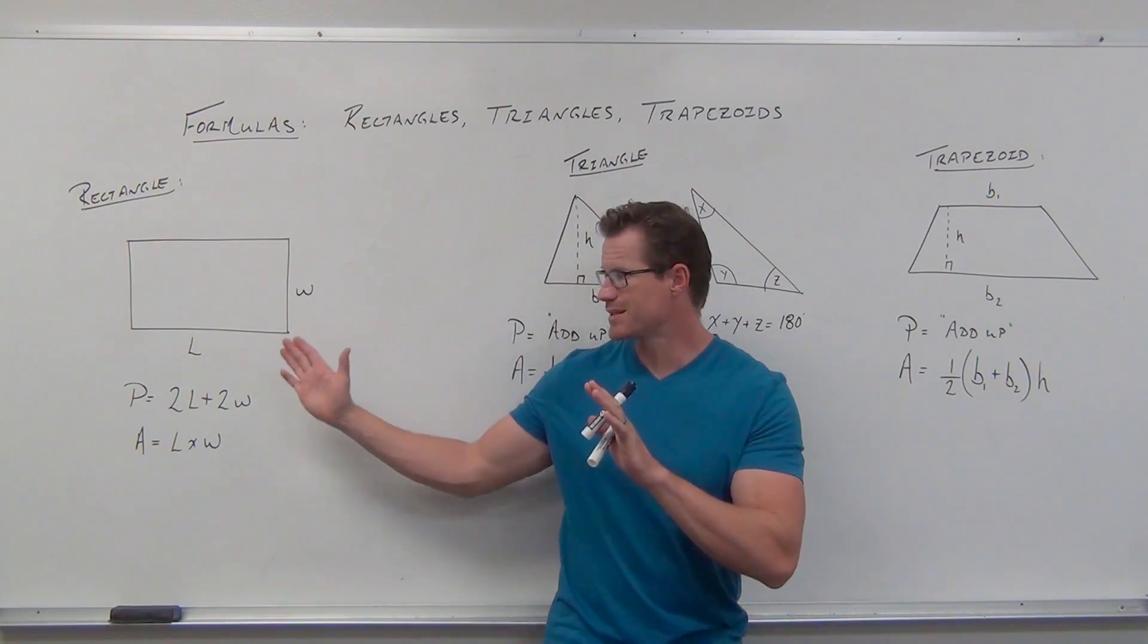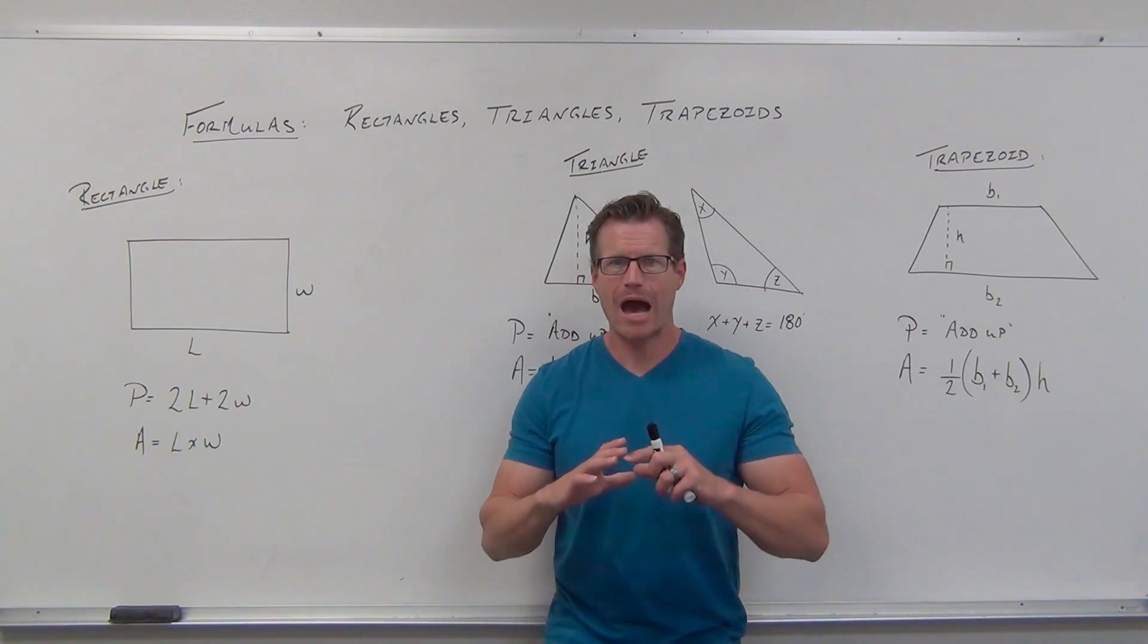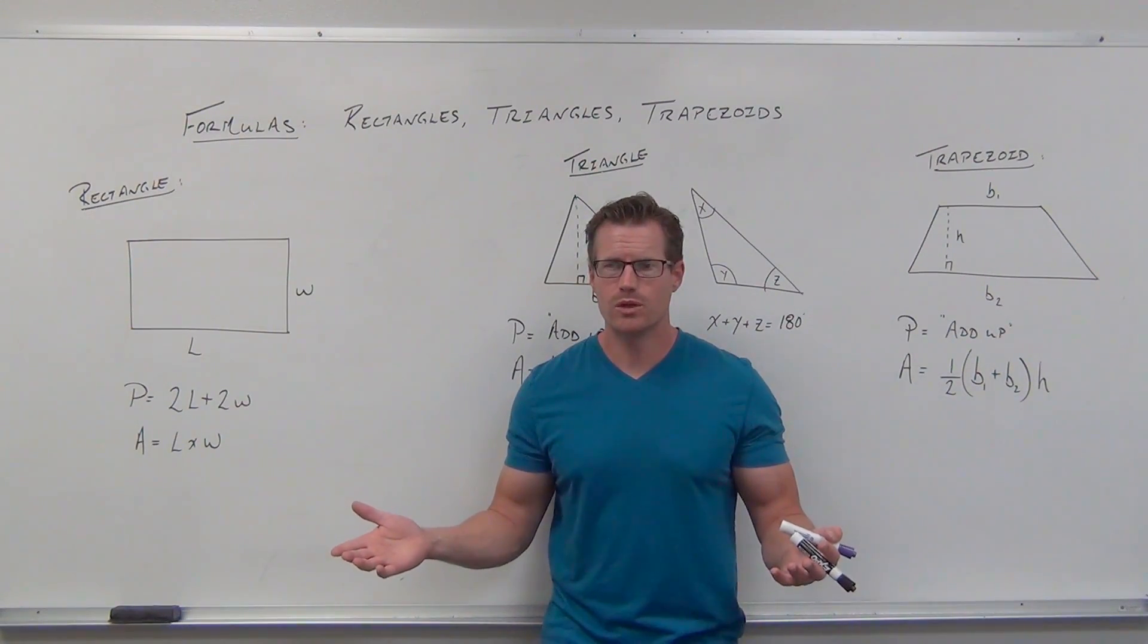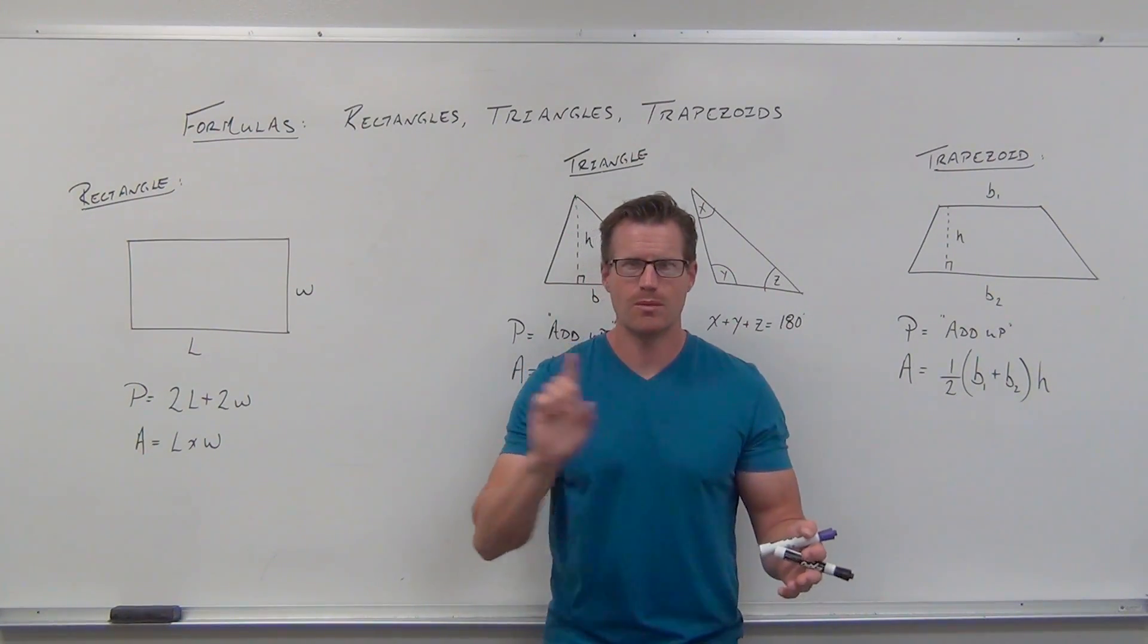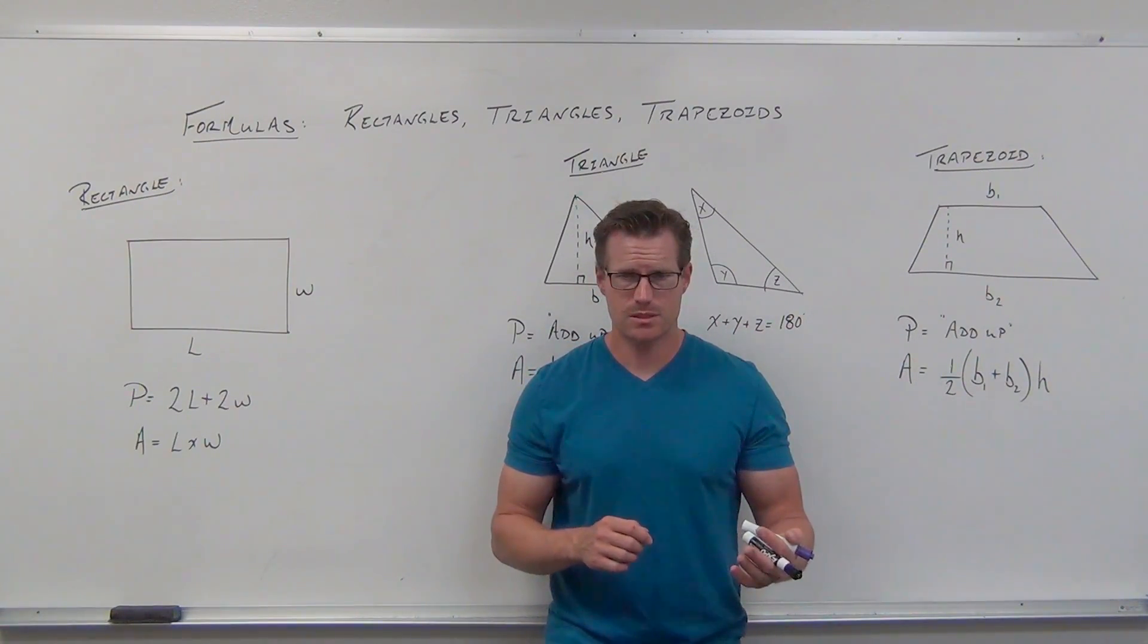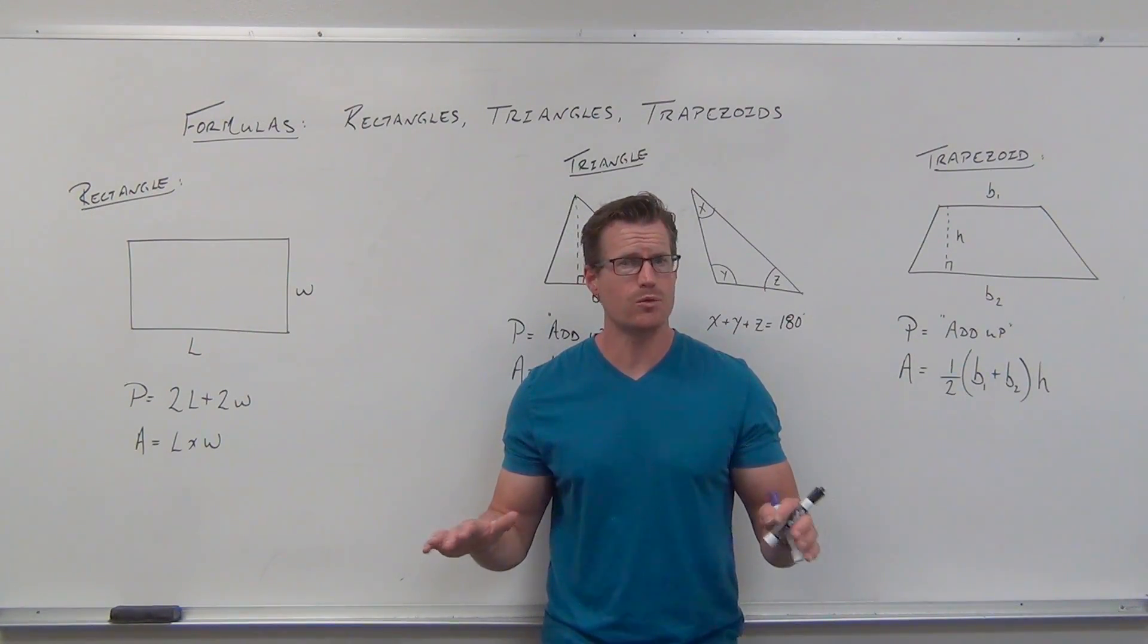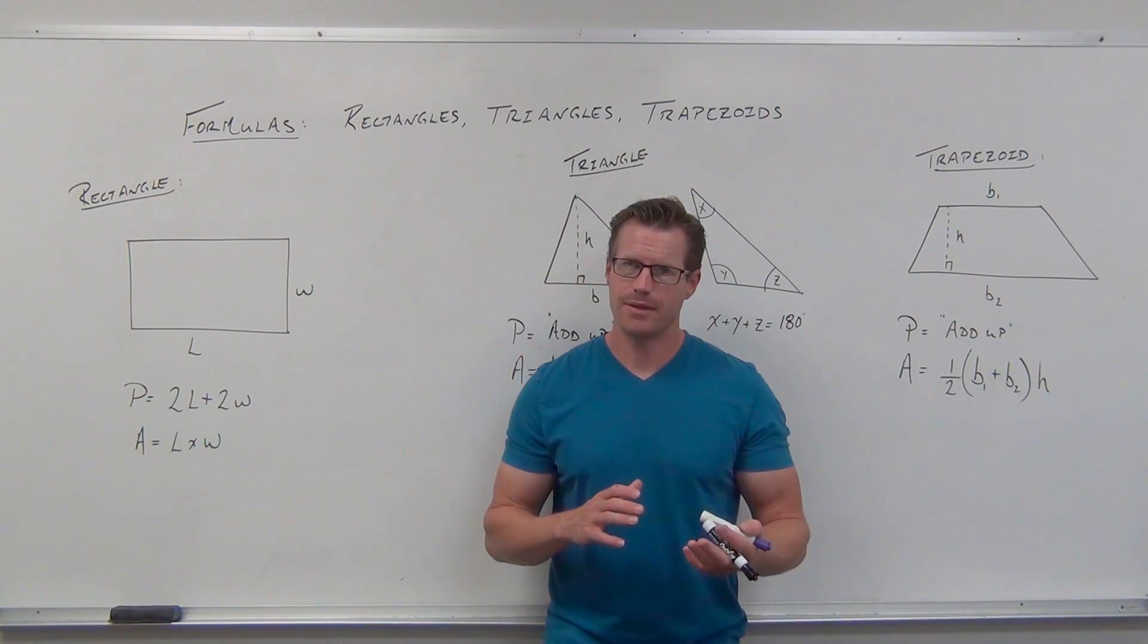We're talking about planar figures, stuff you'd draw on a whiteboard or paper. Area is how much surface your figure covers - it's a carpet or lawn idea. When you go to Home Depot, baseboard is the perimeter idea, measured in linear units like feet, inches, or meters. Area is the amount of surface covered, measured in square feet, square meters, or square centimeters.